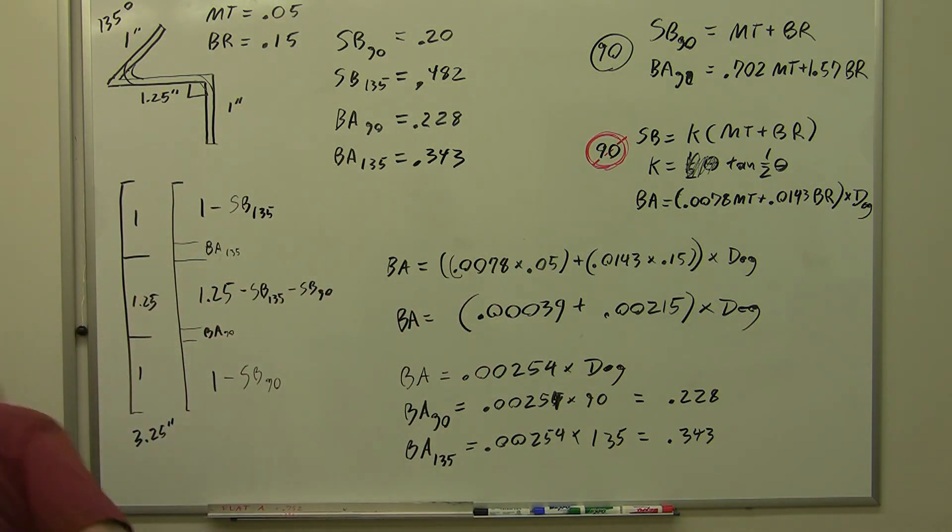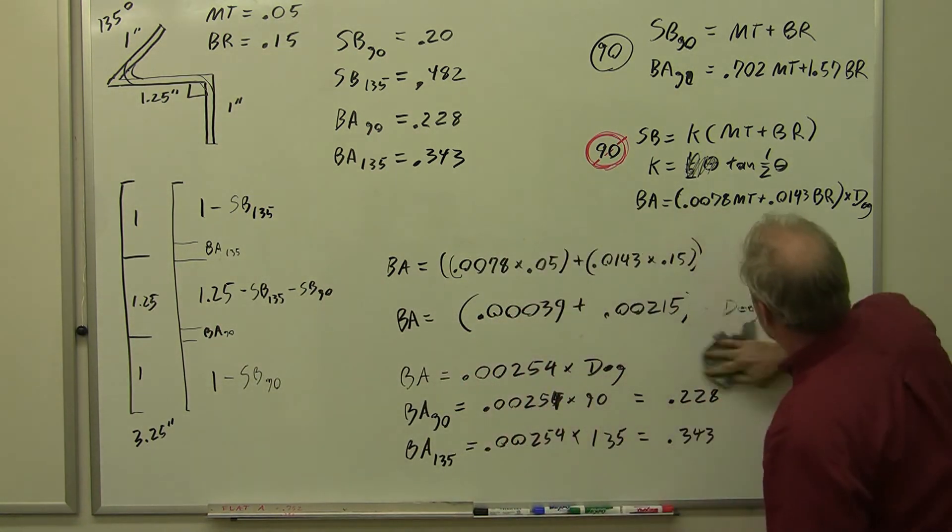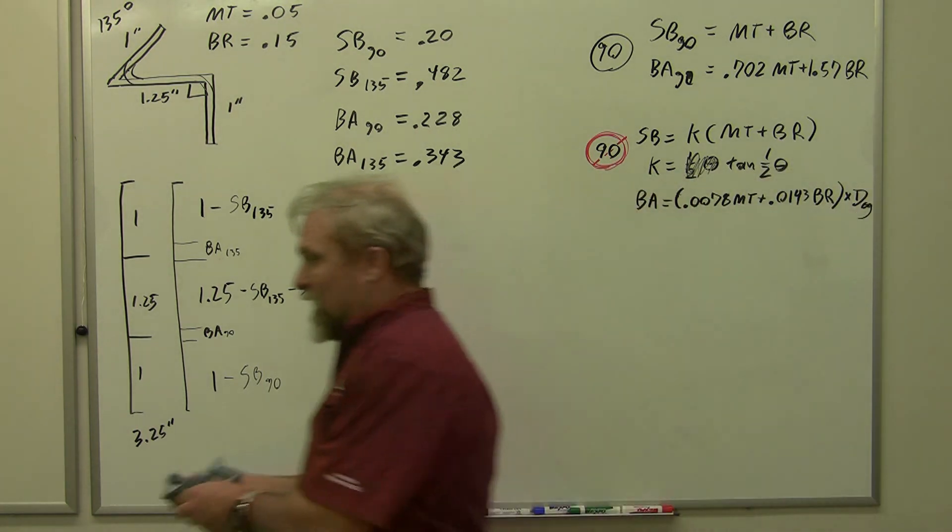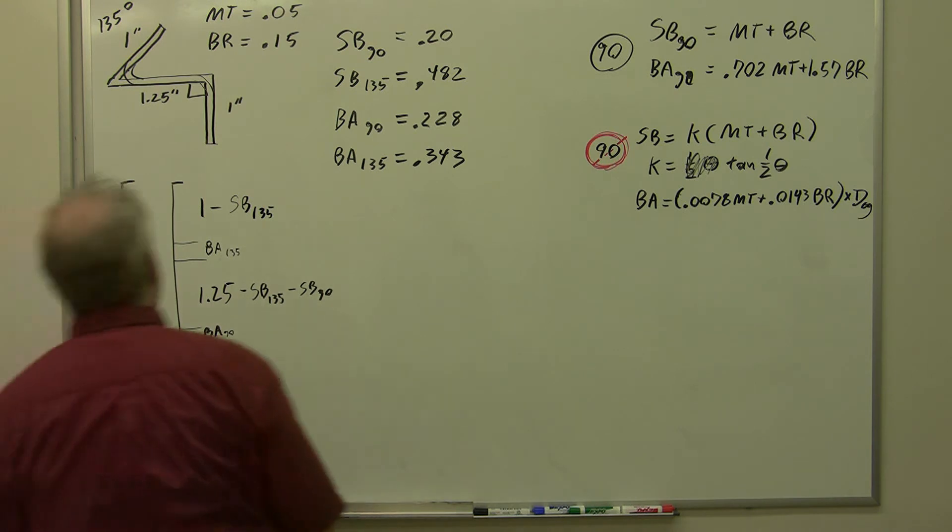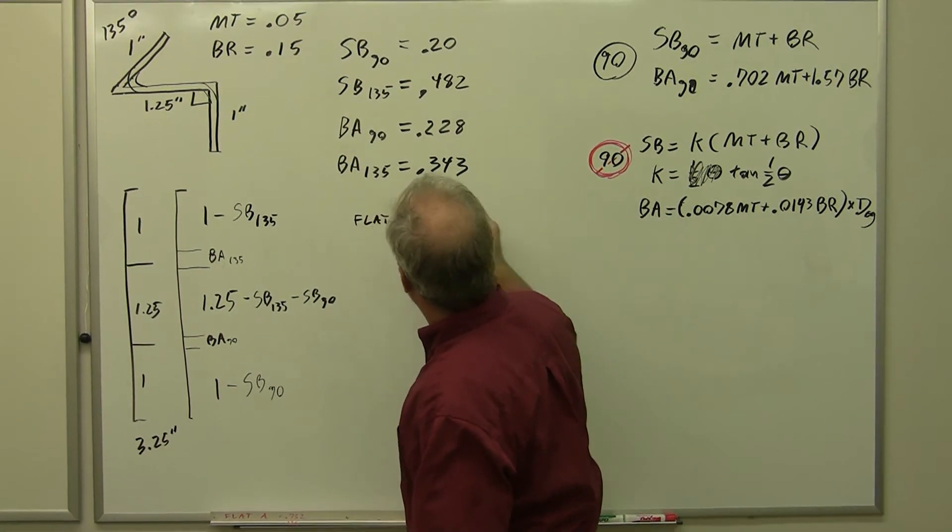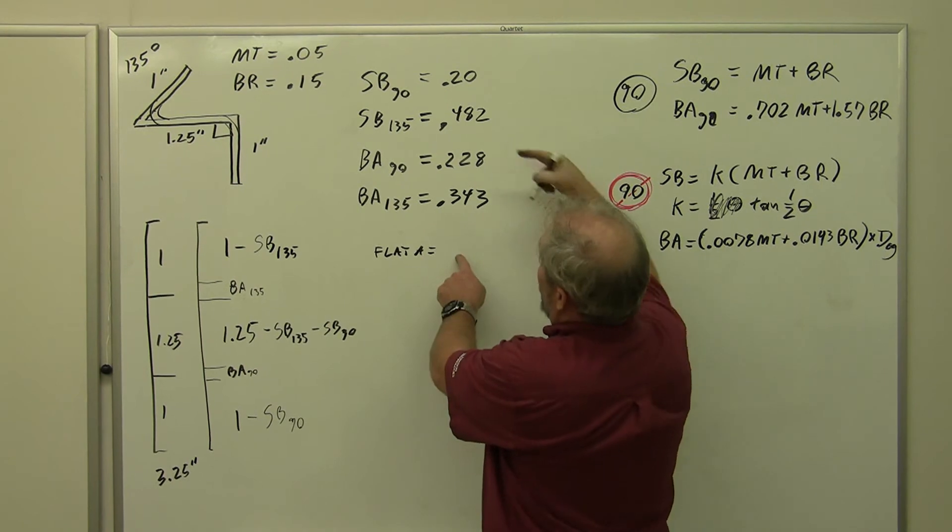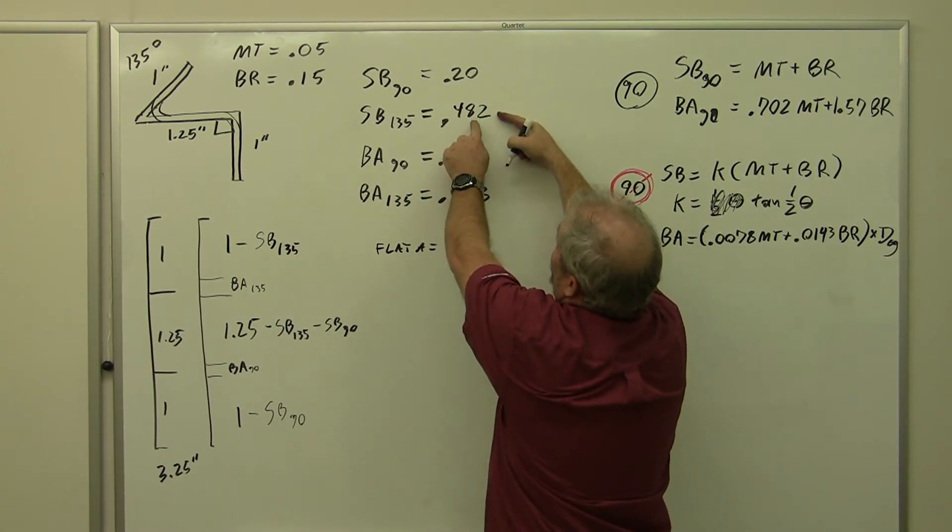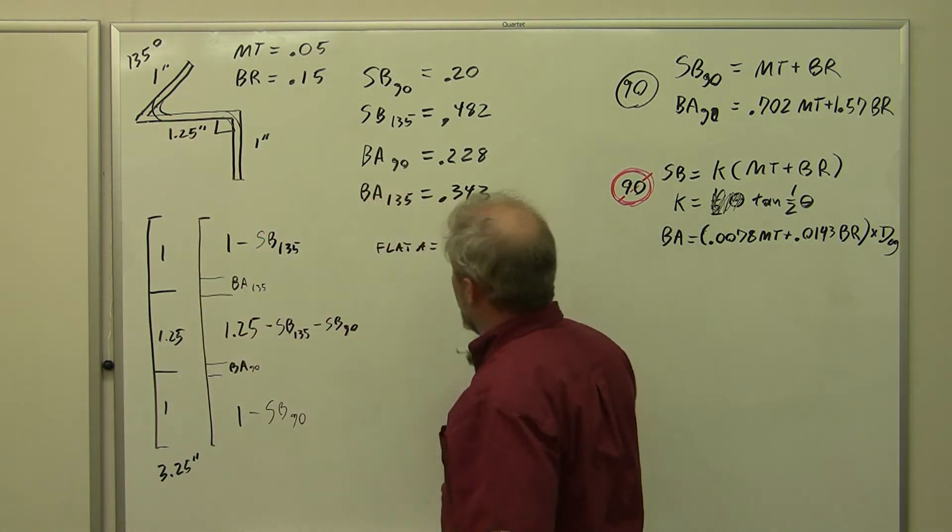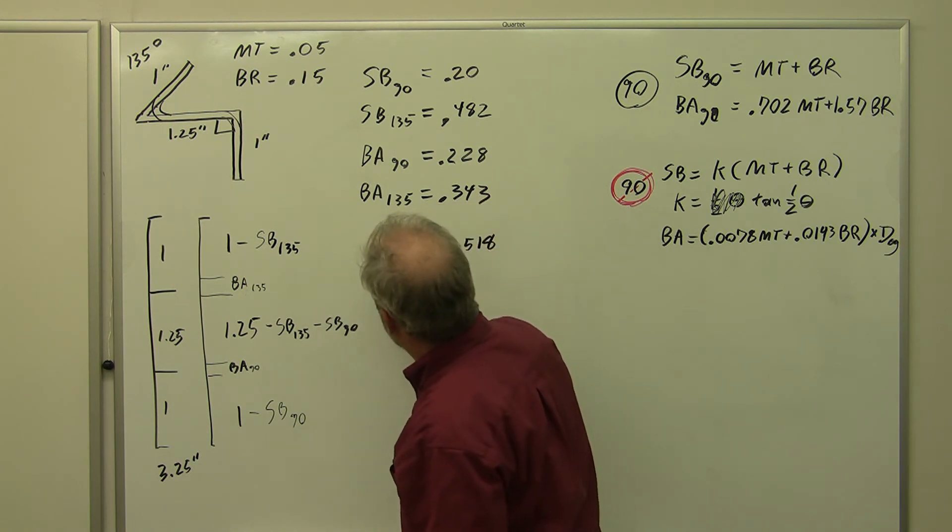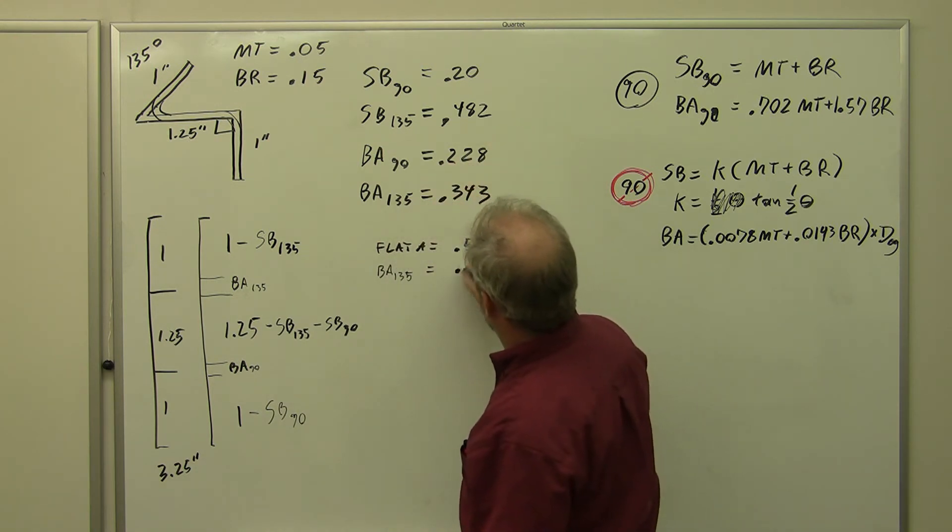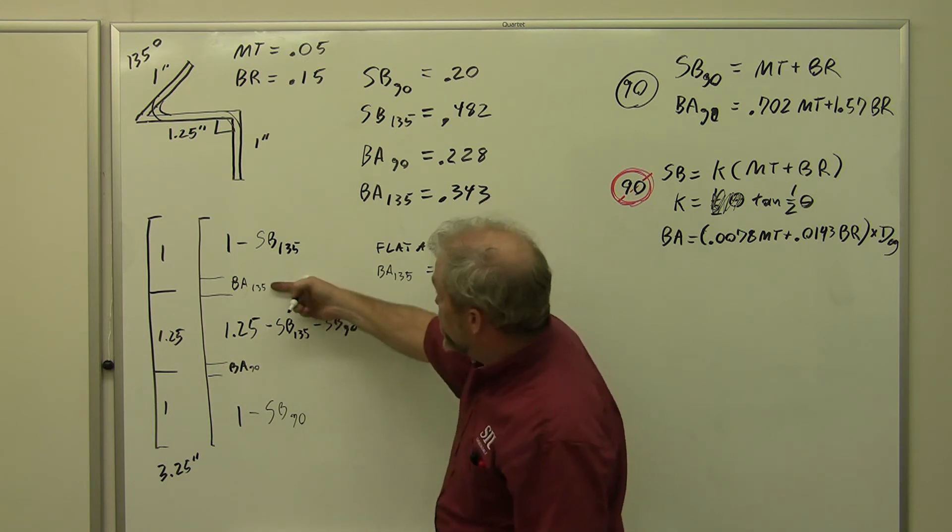Now I have all the numbers that I need to write my formulas down over here. So let's get rid of this stuff. And I have to substitute all these numbers in, and this is where she gets crazy. We have, for this first flat, flat A equals 1 minus setback 135, that's 0.518. It got trimmed quite a bit. My bend allowance 135 equals 0.343, that's this piece right across here.